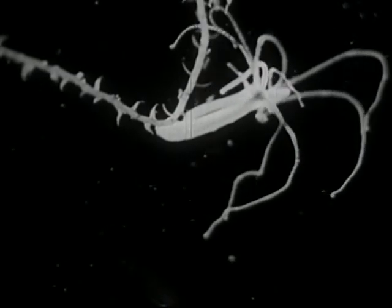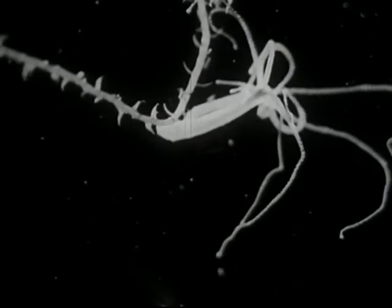These tentacles can entangle and hold the hydra's intended victim. We'll soon see an exciting fight to death, as a Daphnia swims too close. The tentacles contain poisoned darts, which are coiled up inside special cells until they're released by the approach of the prey.